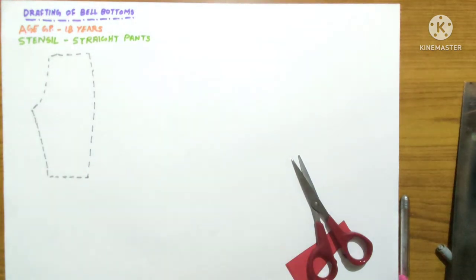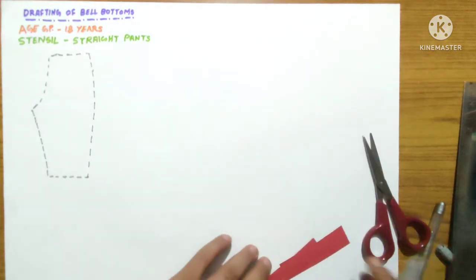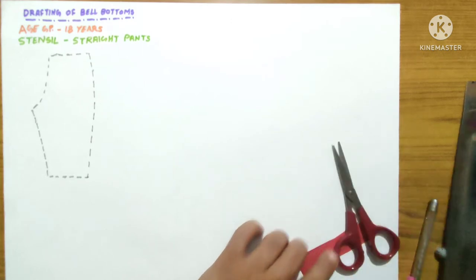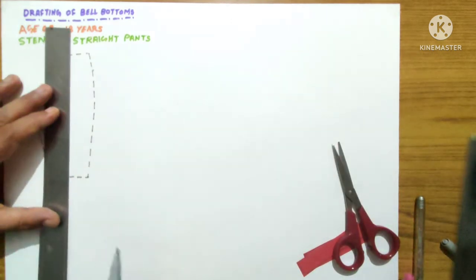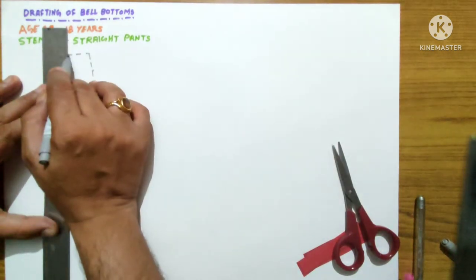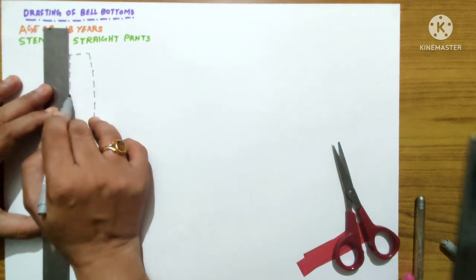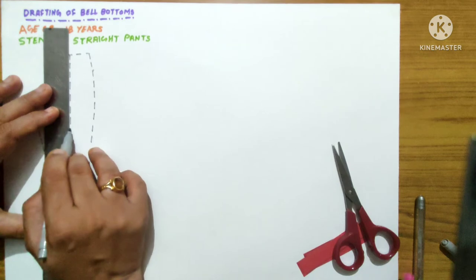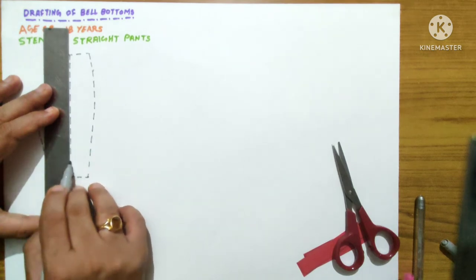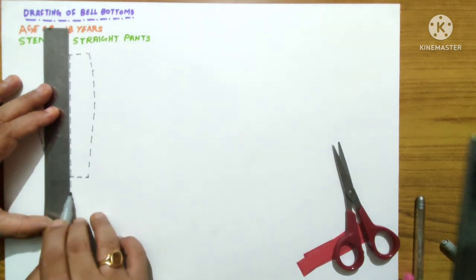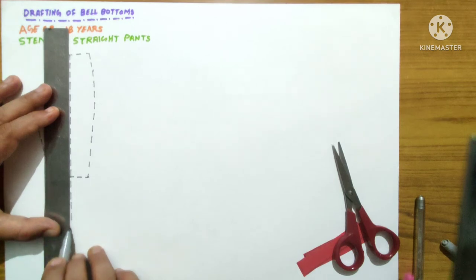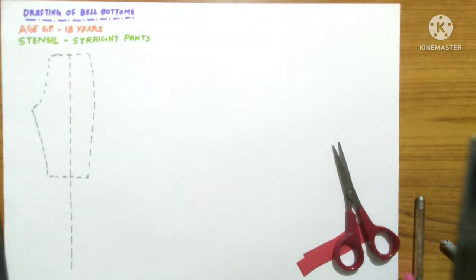Now what we will do, we will mark a center line just we have marked in the stencil, in the same way we will mark the center line, an imaginary line it is. For that what you need to do, you have to take the center of the upper, the waist portion, and you have to take the center of the bottom lower portion and then you have to just join it.